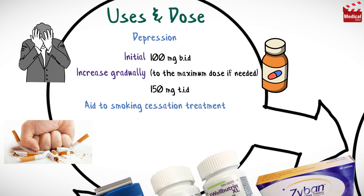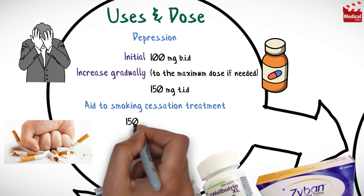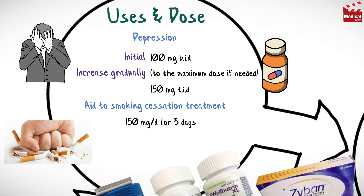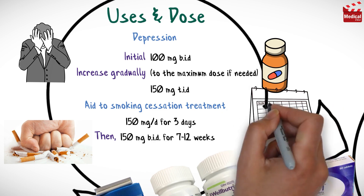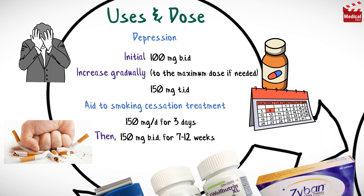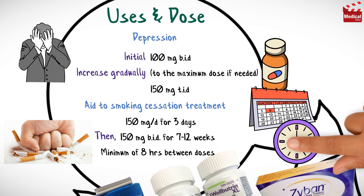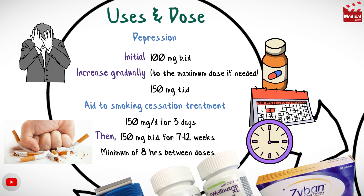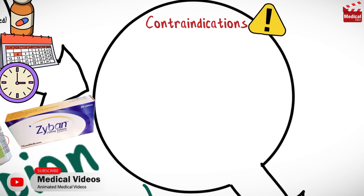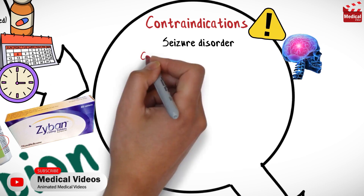The maximum dose for depression is 150 milligrams three times per day. The usual dose for smoking cessation is 150 milligrams per day for three days, then 150 milligrams twice a day for 7 to 12 weeks, with a minimum of eight hours between doses.